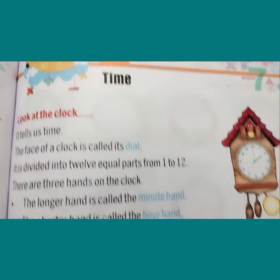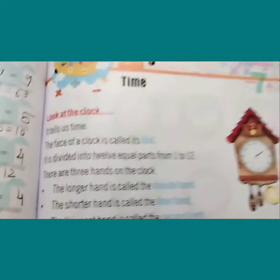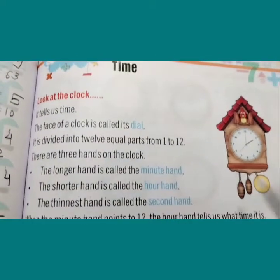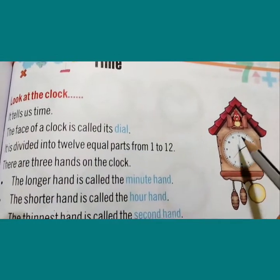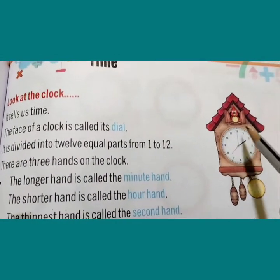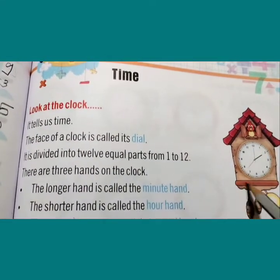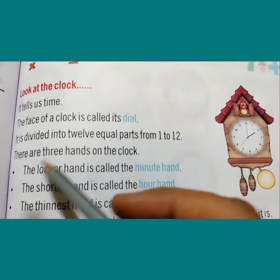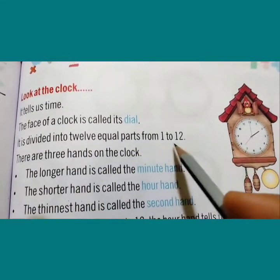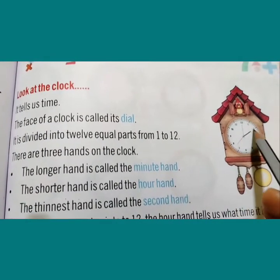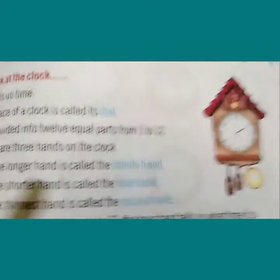Look at the clock shown here. It tells us the time. The face of a clock is called a dial. The dial is divided into 12 equal parts, from 1 to 12.